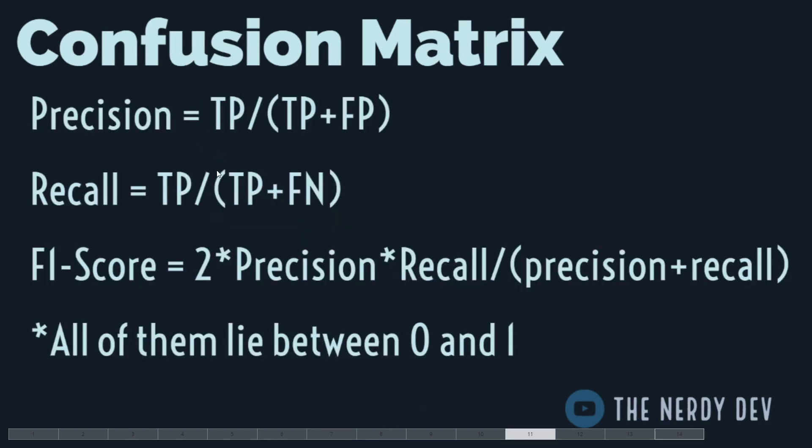Another metric combines both precision and recall: the F1 score. We want both precision and recall to have high values, and both lie between 0 and 1. The F1 score is the harmonic mean of precision and recall: F1 = 2 × (precision × recall) / (precision + recall), and it also lies between 0 and 1.